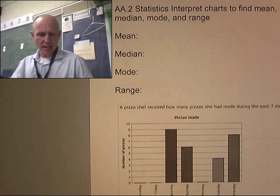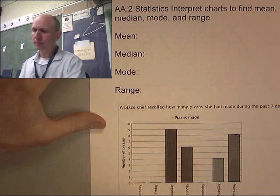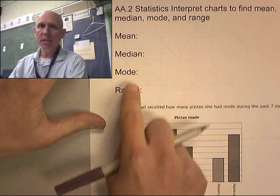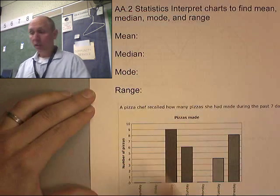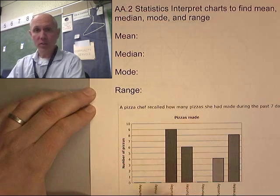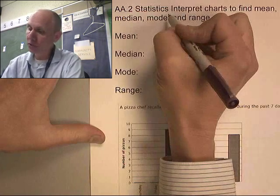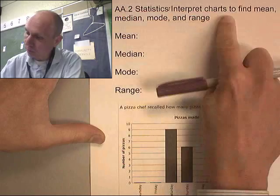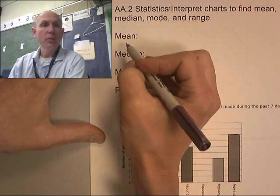Hello, I am Mr. Barr and we're still going to talk about statistics. We're going to do a quick little review of mean, median, mode and range, and then we're going to look at how we can use this information — how we can pull this information off of different types of charts and tables. So this is statistics: how to interpret charts to find mean, median, mode and range. Let's review this.